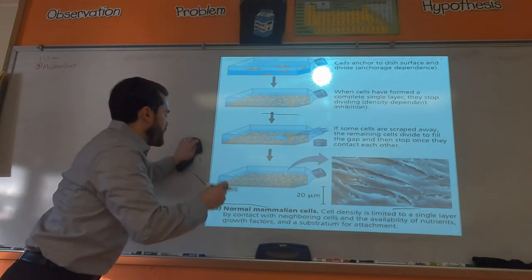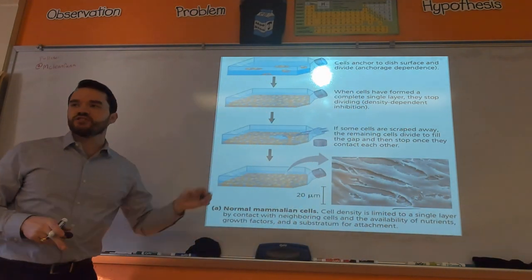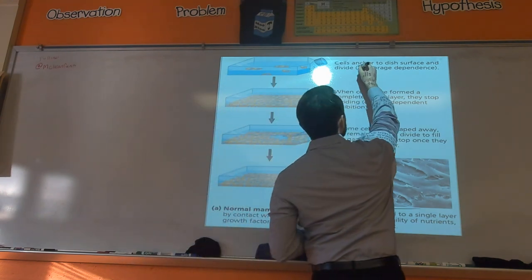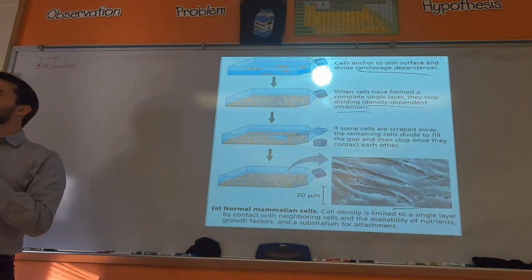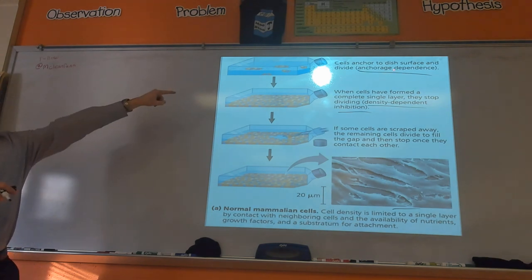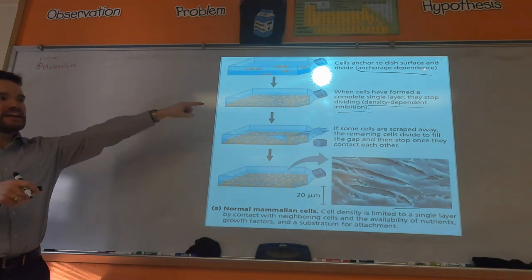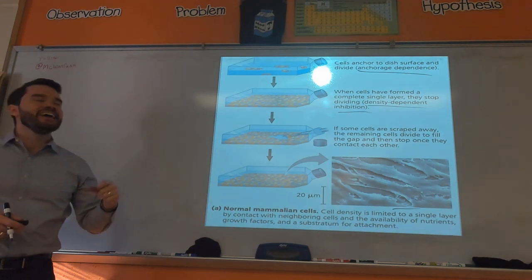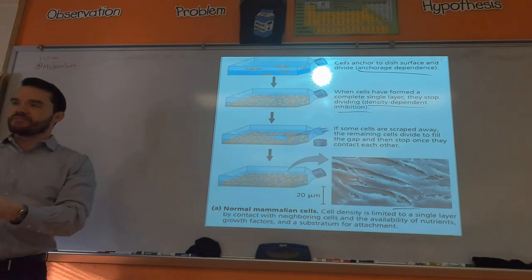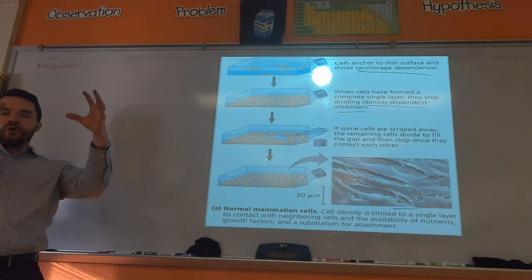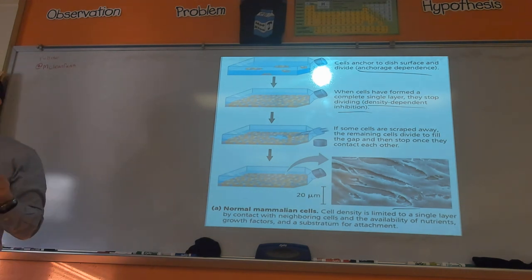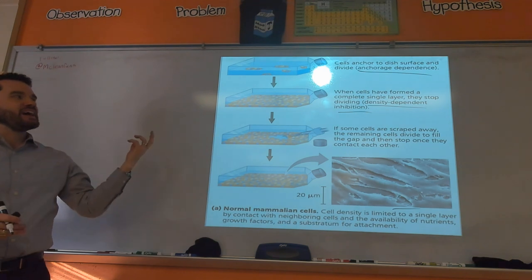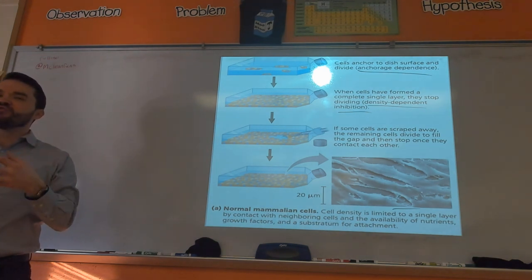Two other kinds of external growth factors are anchorage dependence and density-dependent inhibition. Anchorage dependence means cells require anchorage to divide — cells don't just grow floating freely in liquid. They need to be anchored to something, which in the body is the extracellular matrix. This helps cells form tissues and organs that function properly.